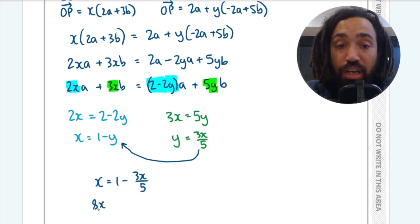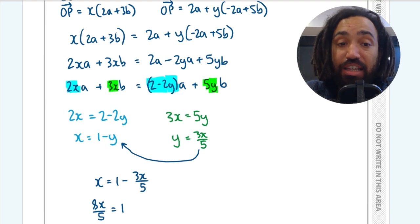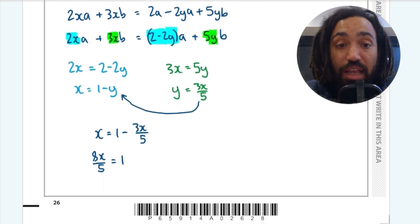And then what I can do is move that 3X over 5 to the other side to get 8X over 5 is equal to 1. And then finally I can find an expression for X which will be X is equal to 5 over 8.